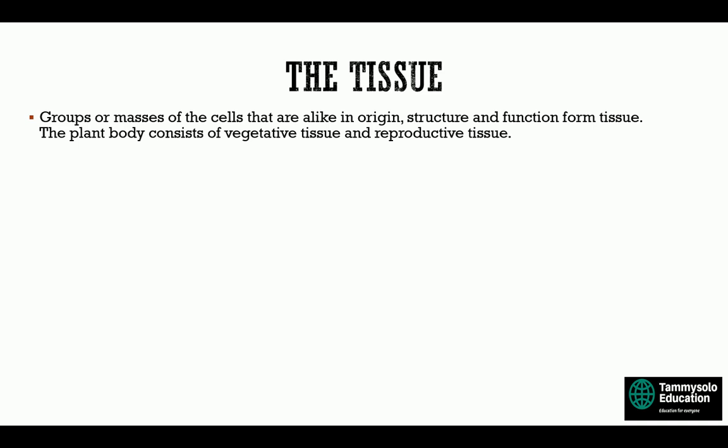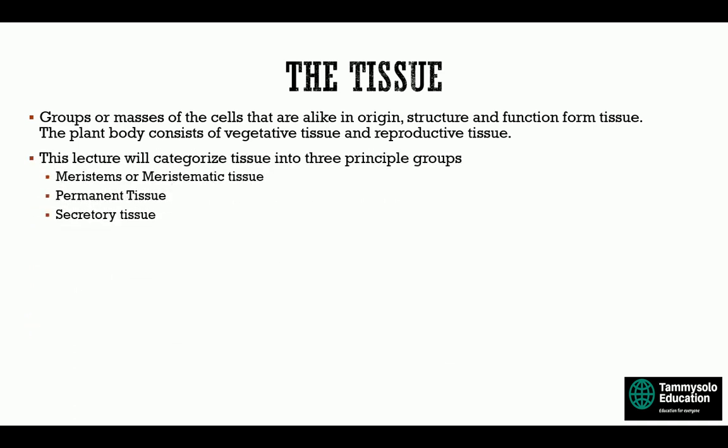Tissues are designated with the formation of vegetative parts, and tissues designated with the formation of reproductive parts. This lecture will categorize tissue into three principal groups: meristems or meristematic tissue, permanent tissue, and secretory tissue.